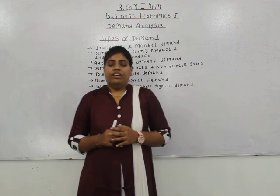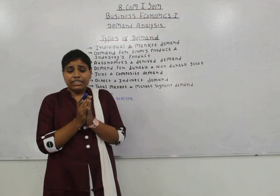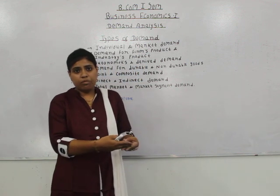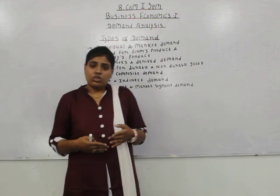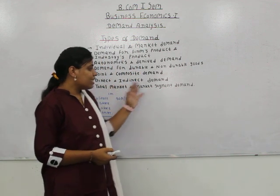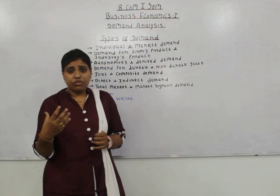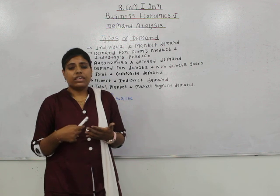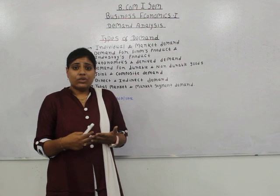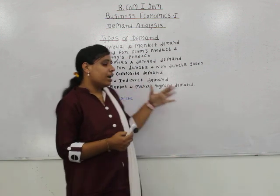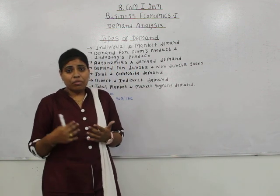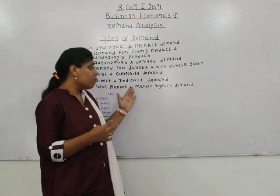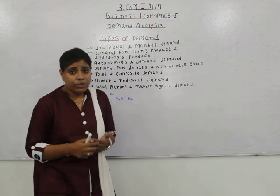The next type is total market demand and market segment demand. The market is divided into different segments on the basis of criteria like age, sex (male and female), and geographical region. When we consider a particular segment to measure demand, it is called market segment demand. For example, demand for Vadilal ice cream in Rajasthan is market segment demand. But demand for Vadilal ice cream all over India is total market demand, which is the sum total of all market segment demands.